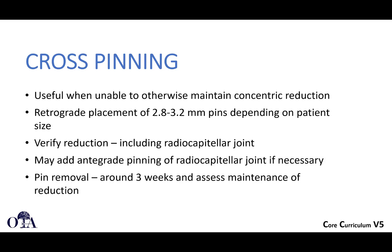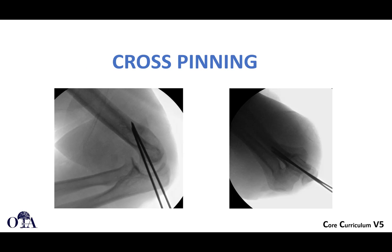Cross-pinning is a simpler technique useful when a concentric reduction of a simple dislocation cannot otherwise be maintained. Use 2.8 to 3.2mm pins depending on patient size, verify reduction, and add antegrade pinning of the radiocapitellar joint if necessary. Pins must be removed before complications such as breakage or infection occur. While not the most common technique, it is a straightforward option to prevent a chronically subluxed or dislocated elbow.